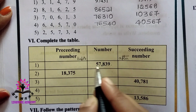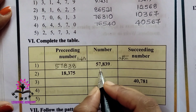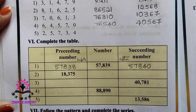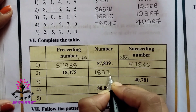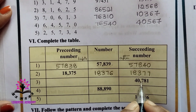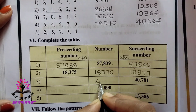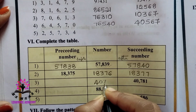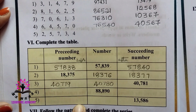The first given number is 57,839. The number that comes before is 57,838; the number that comes after is 57,840. Second: given number 18,375 — preceding is 18,374, succeeding is 18,376. Third: 40,781 — preceding is 40,780, before that would be 40,779. The remaining two problems you can solve by yourself.